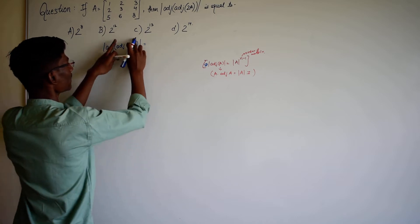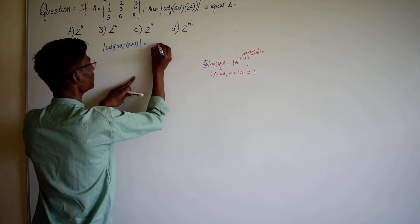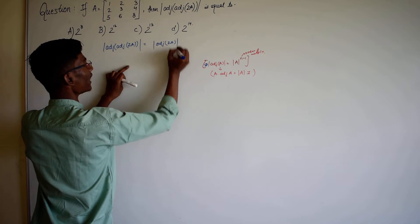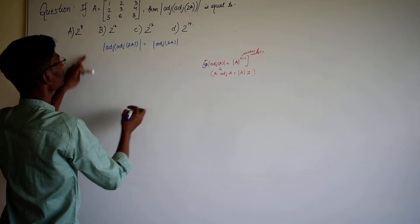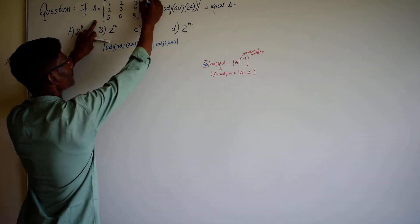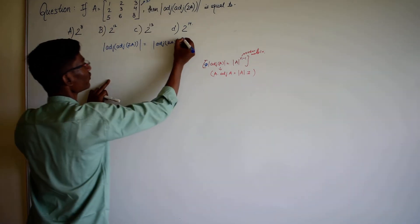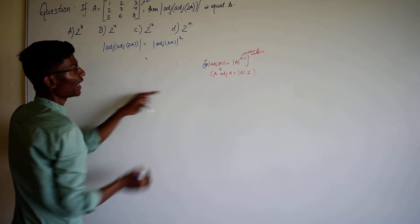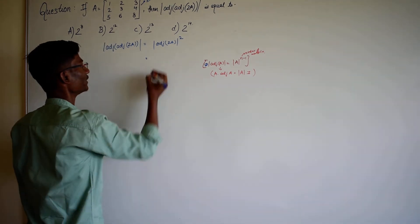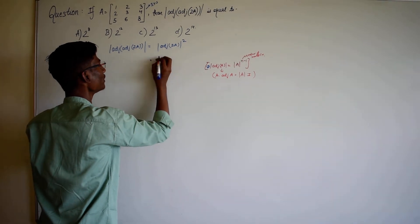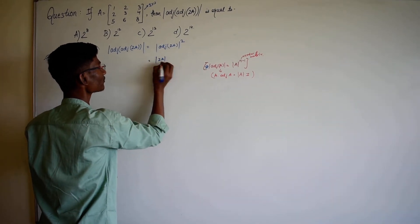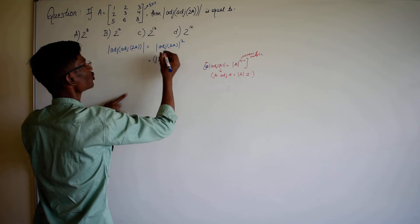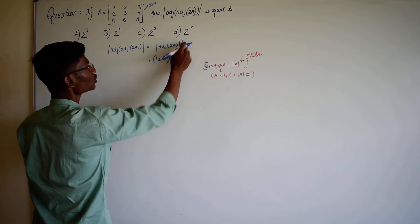So here we use this identity and simplify. Adjoint of adjoint of 2A equals determinant of 2A raised to power n minus 1, whole raised to power n minus 1. The order of the matrix is 3×3, so n equals 3, and n minus 1 equals 2. So determinant of adjoint of 2A equals determinant of 2A raised to power n minus 1, with n minus 1 equal to 2, whole raised to the power 2.